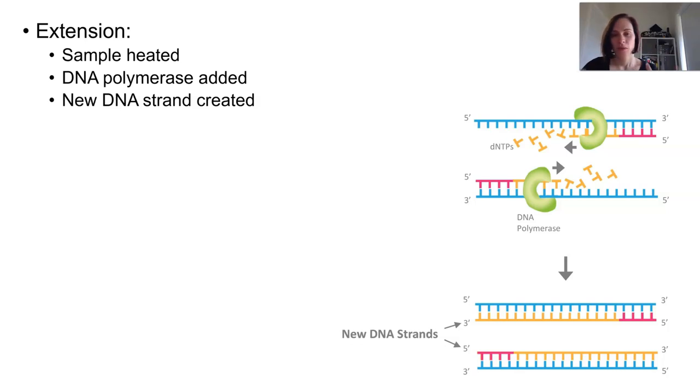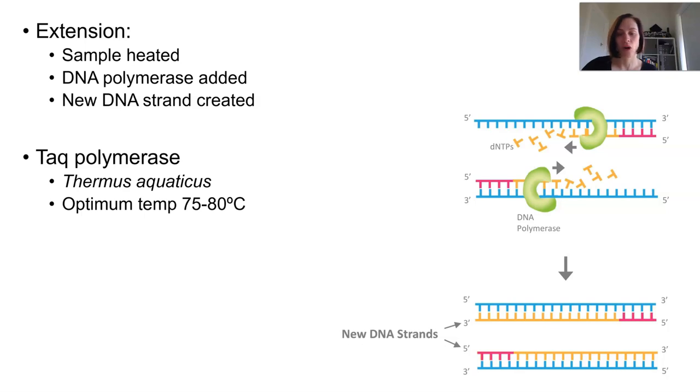Now, you might remember that enzymes denature at really high temperatures. So the polymerase that's used has to work at these high temperatures. We're talking 75 to 80 degrees here. So TAC polymerase is often used, and it comes from a thermophile bacteria, so it works really well at high temperatures.